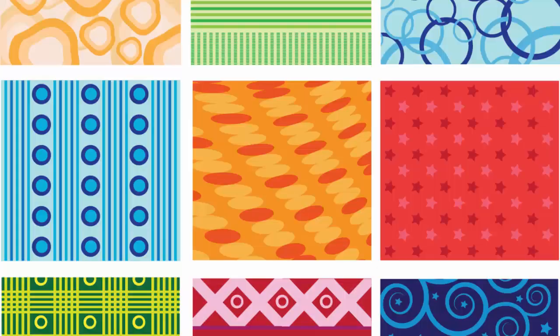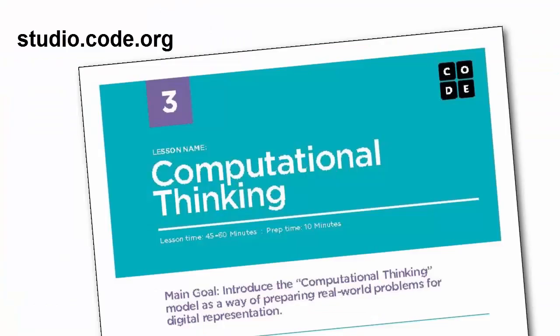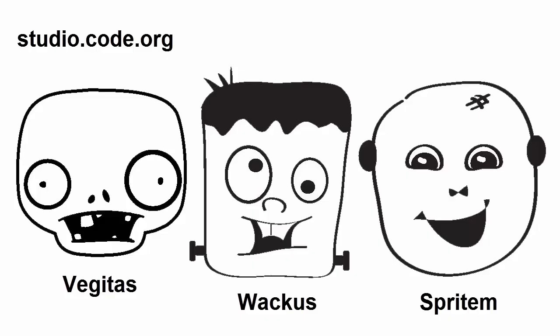Since computational thinking can be used in any subject area, the type of patterns to be recognized vary widely. Let's look at how pattern recognition can be used to address some different types of problems. The computational thinking activity provided by studio.code.org is an excellent offline activity that demonstrates the computational thinking process visually as students make a monster. The decomposition and pattern recognition steps are closely related in this case, so both are introduced here. The goal of the activity is for students to design an efficient method — a program — for others to be able to recreate drawings of monsters with unique sets of features.